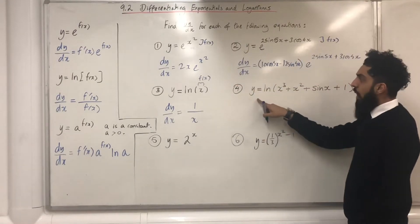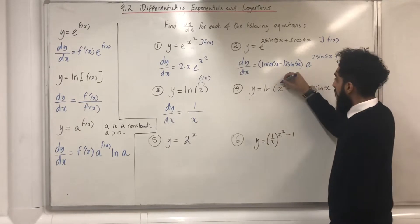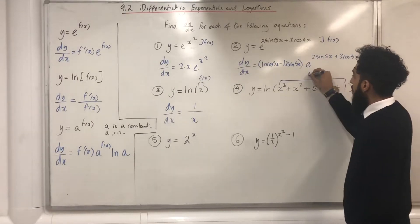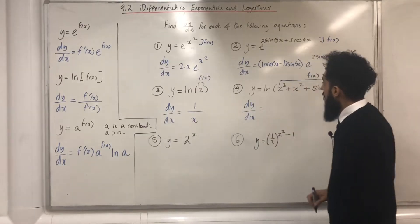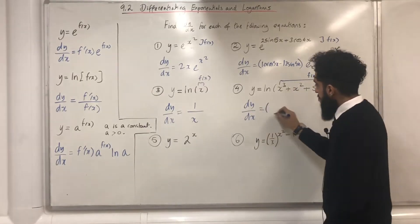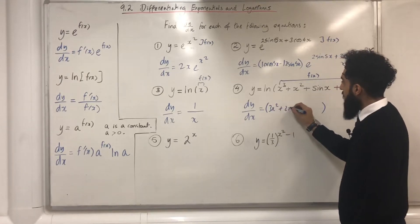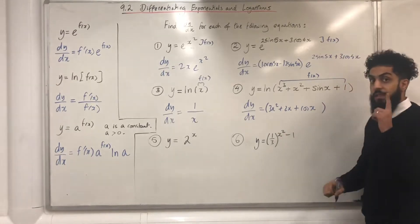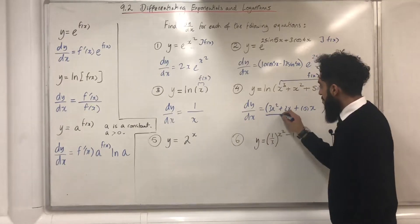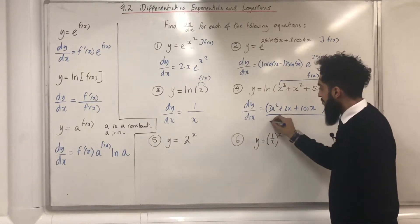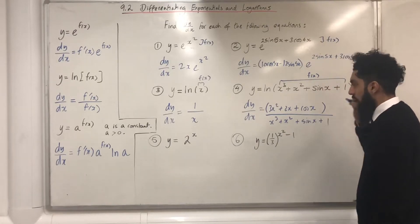Question number 4: y equal ln(x³ + x² + sinx + 1). This is my f(x). dy/dx is equal to — I differentiate my f(x) and obtain 3x² + 2x + cosx. Remember, if you differentiate a constant it is just 0. All over my f(x), which is x³ + x² + sinx + 1.